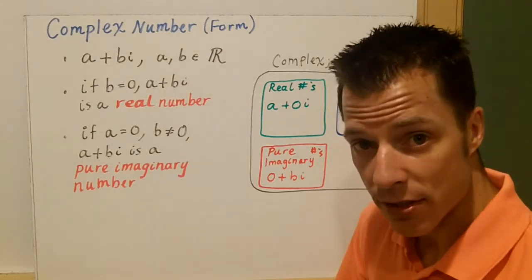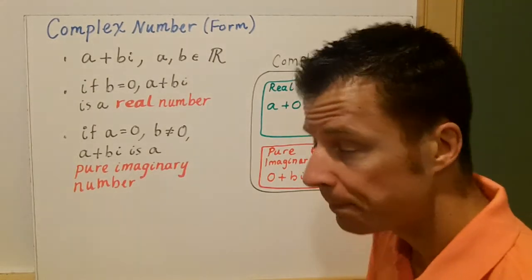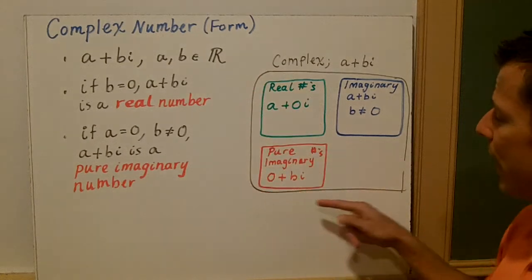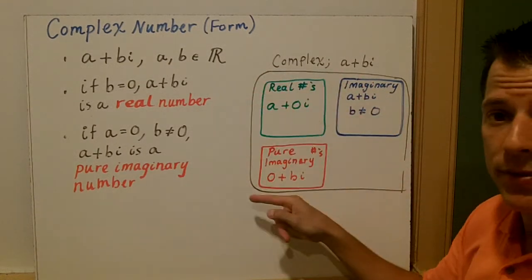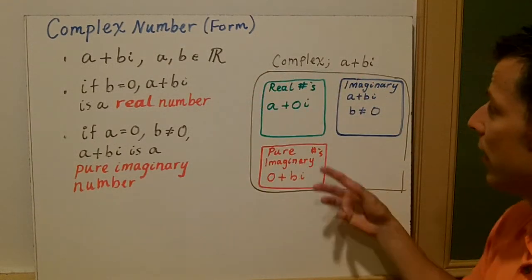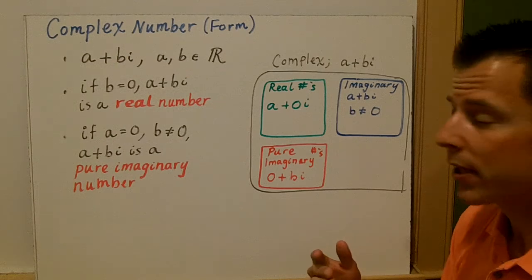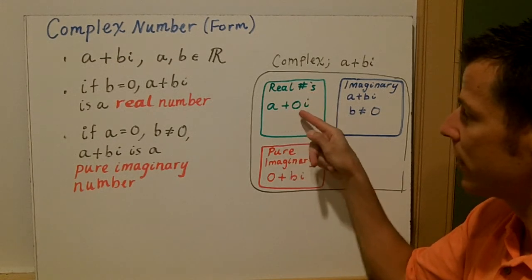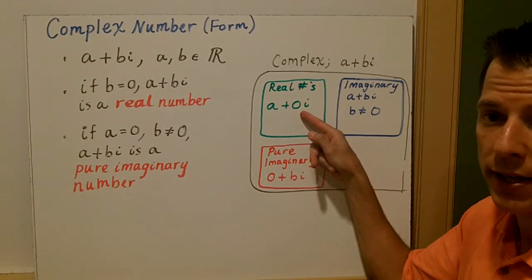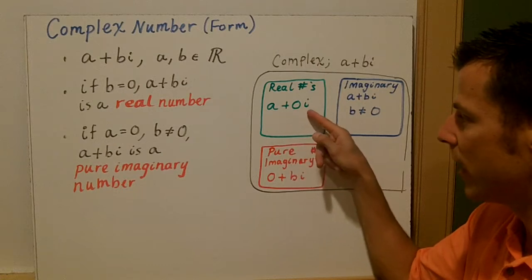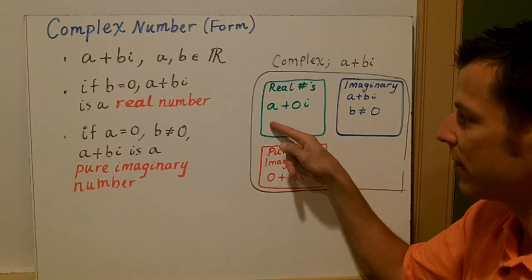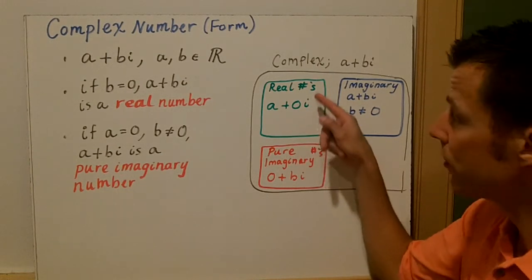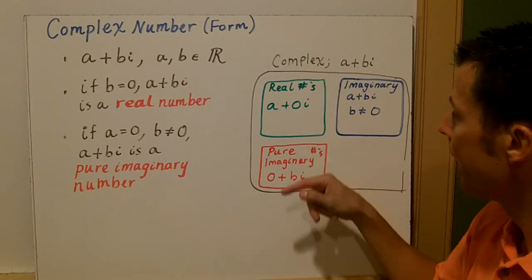So let's look at this number set. We have the complex number system, and there are three types of complex numbers. There are reals — a plus zero-i — anything in that form: five plus zero-i, negative six plus zero-i. Those are real numbers. They're still complex, but they're real.